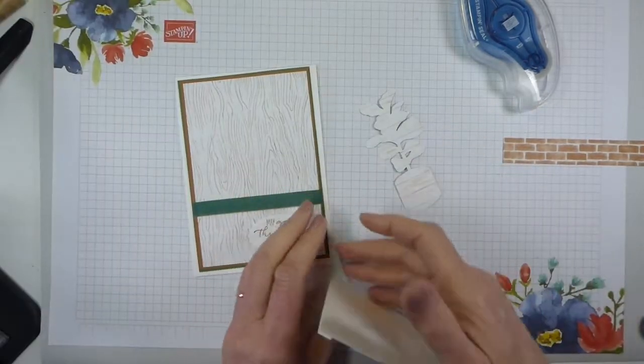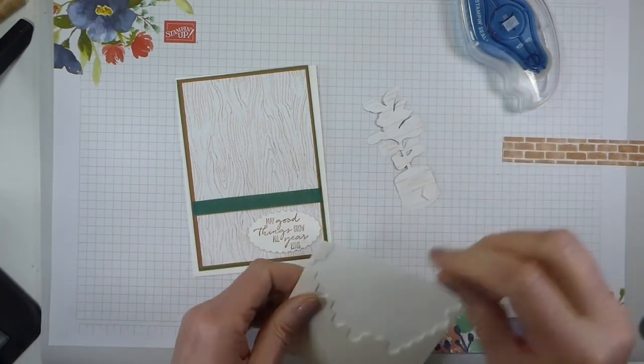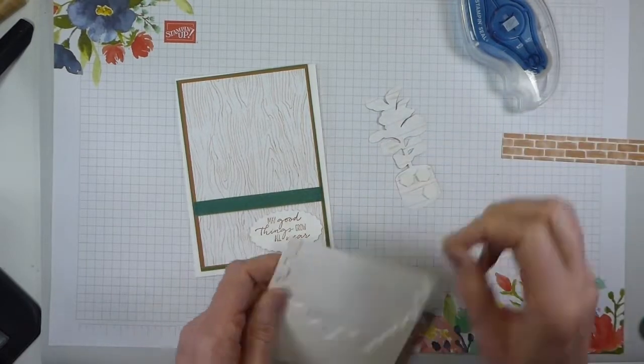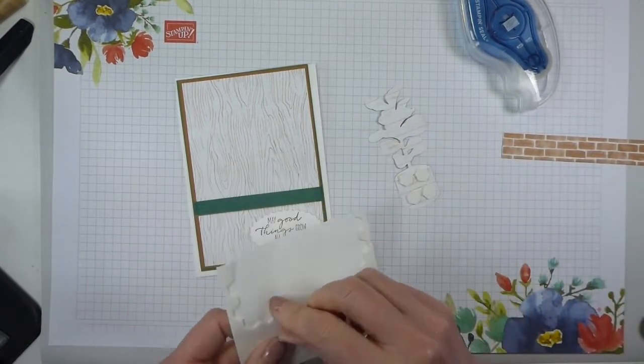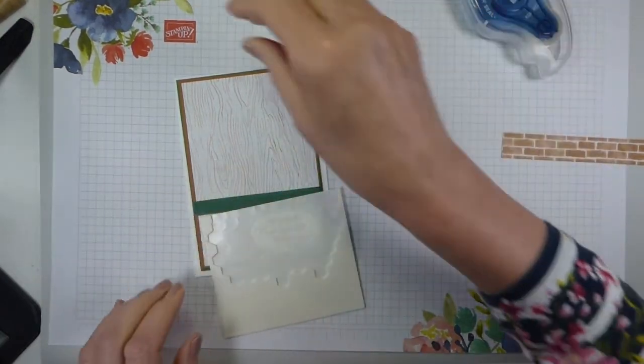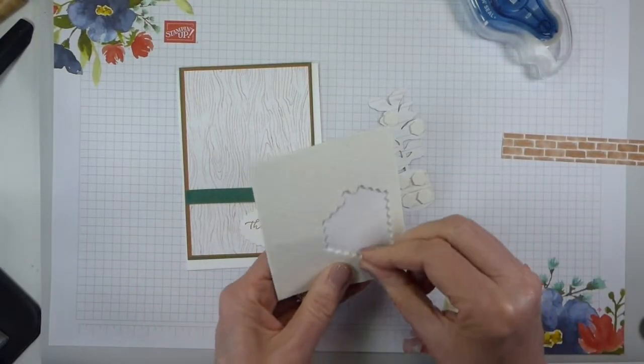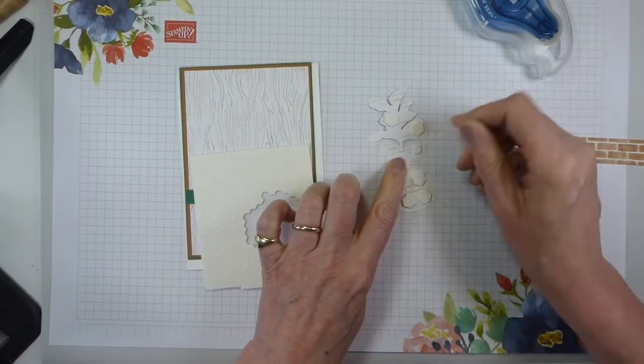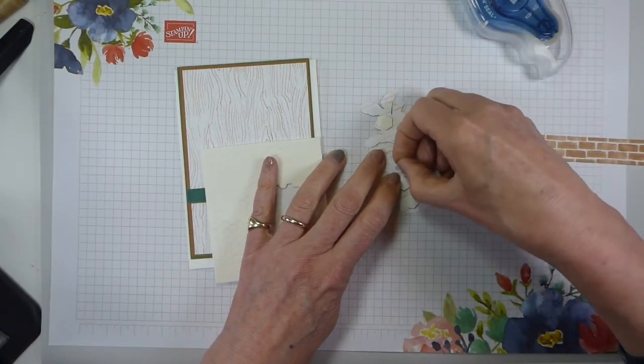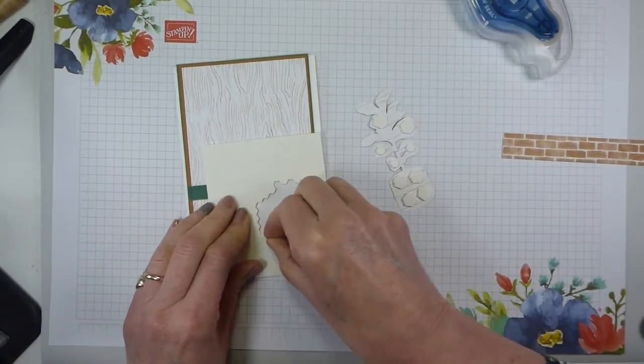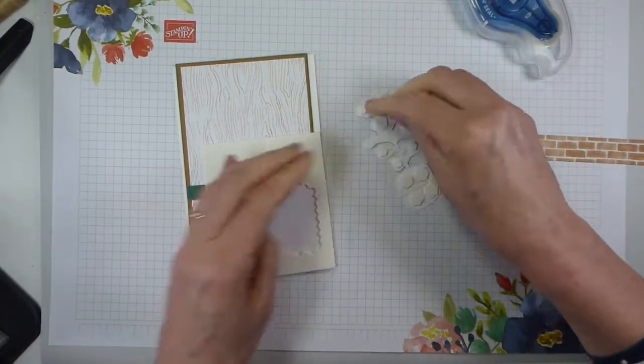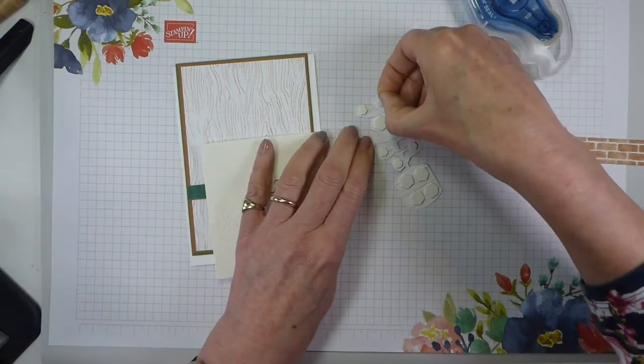So I'm going to use large and small dimensionals on this. So large ones we can have at the bottom. It is paper, so I'm going to be a little more generous than I would normally be with my dimensionals. If this was a die cut in card, I wouldn't put so many on, but paper I do like to be a little more generous. And then some minis. Just pop those in where these leaves are.